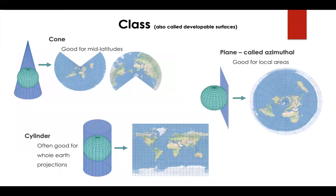Class, also called your developable surfaces, have three options: cone, plane, or cylinder. Imagine a piece of paper going around your globe and a light shining out from the middle of the globe. The results of these different classes are maps which have different shapes.